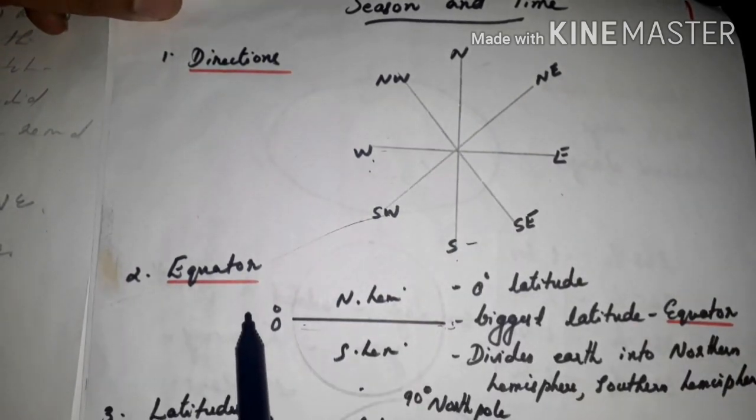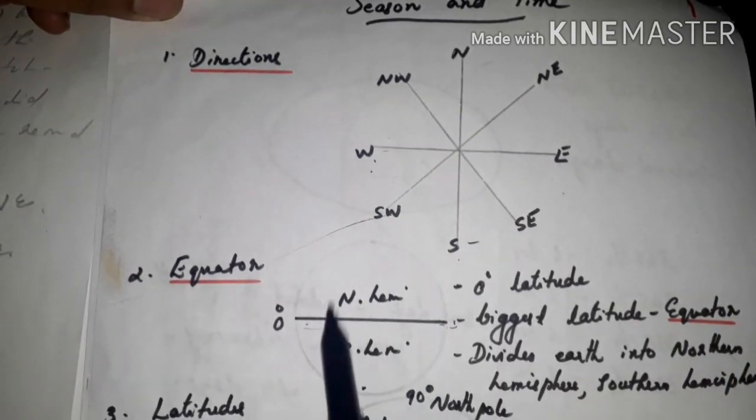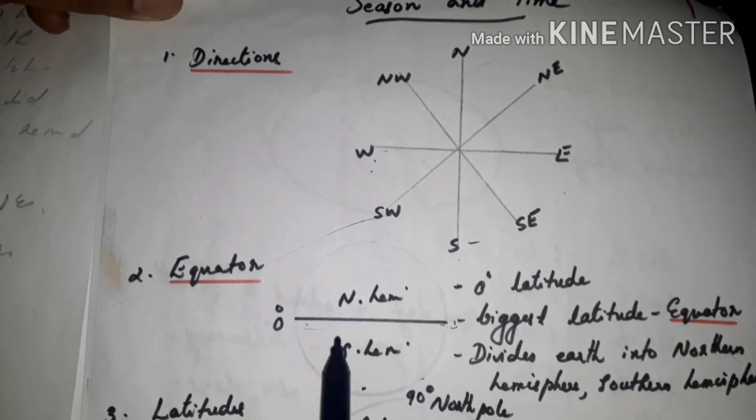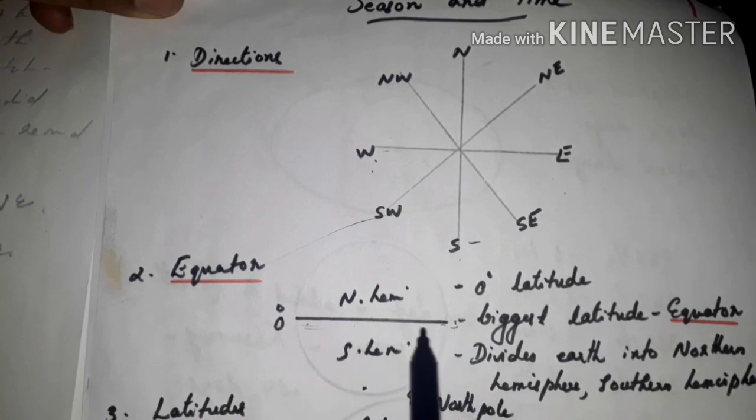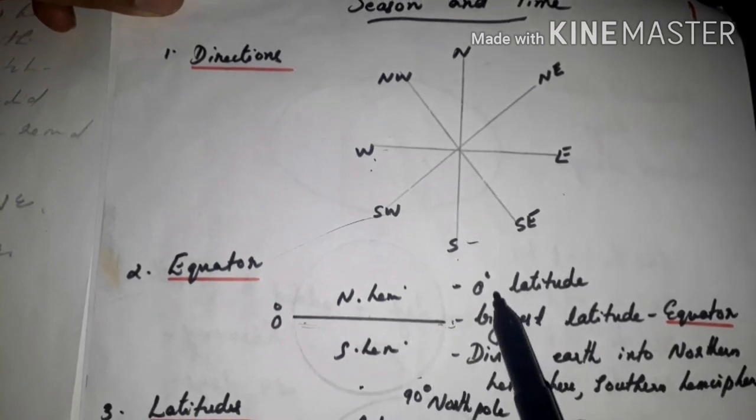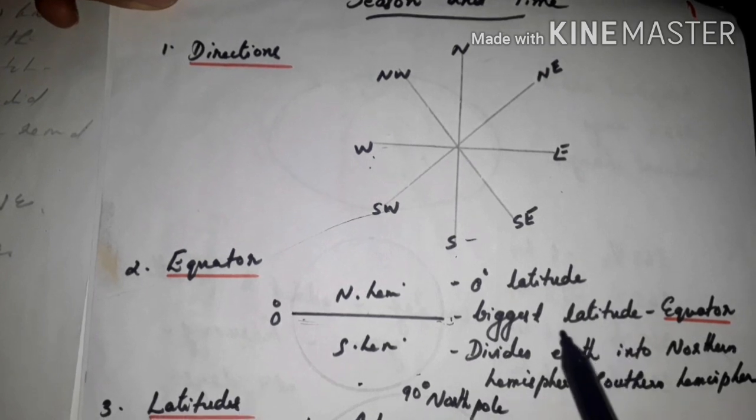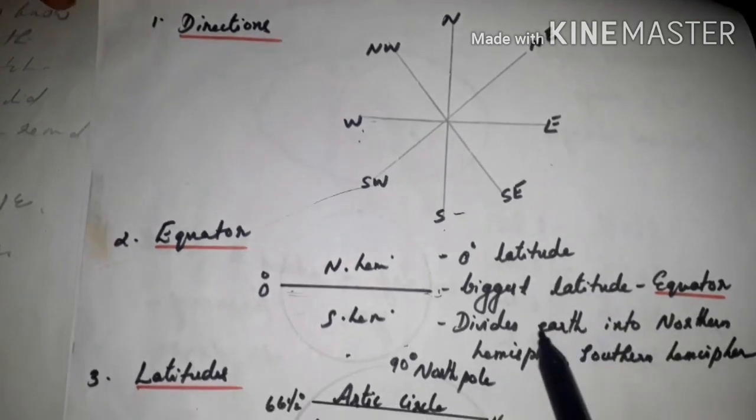Next, equator. When we draw a circle like this, we draw a line at the center. This is the imaginary line drawn horizontally at center of Earth. This is the zero degree latitude. It is the biggest latitude. It divides Earth into two hemispheres: northern hemisphere and southern hemisphere.